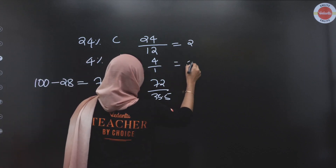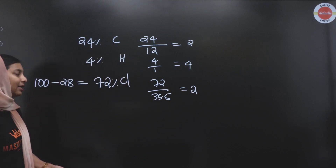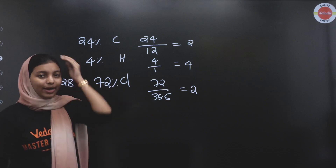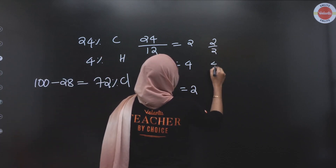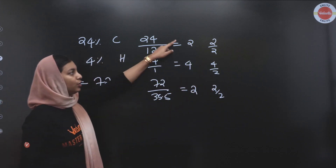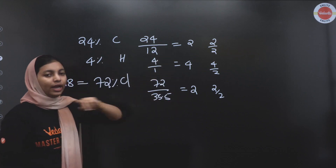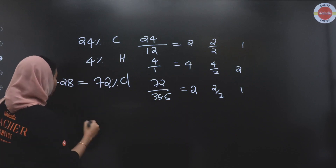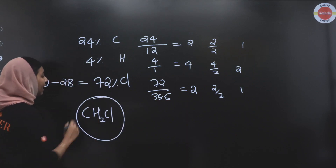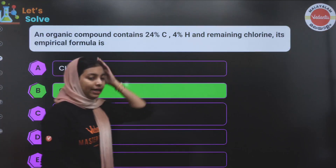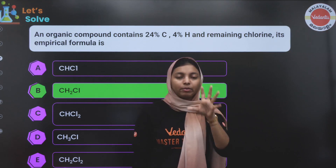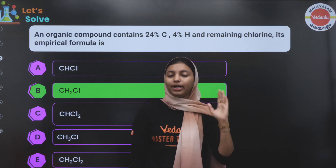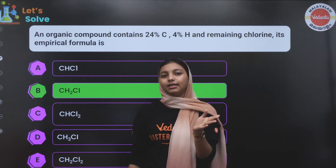This value is approximately 2.0-something, so we call it 2. If we put this value and divide all the values by 2 — dividing 2 by 2, 4 by 2, 2 by 2 — we get the ratio 1, 2, 1. That's why we choose the empirical formula CH₂O. For finding the empirical formula, if we have the mass percentage, we divide that value by atomic mass, then divide all values by the smallest value, and choose the whole number ratio. That's the empirical formula.